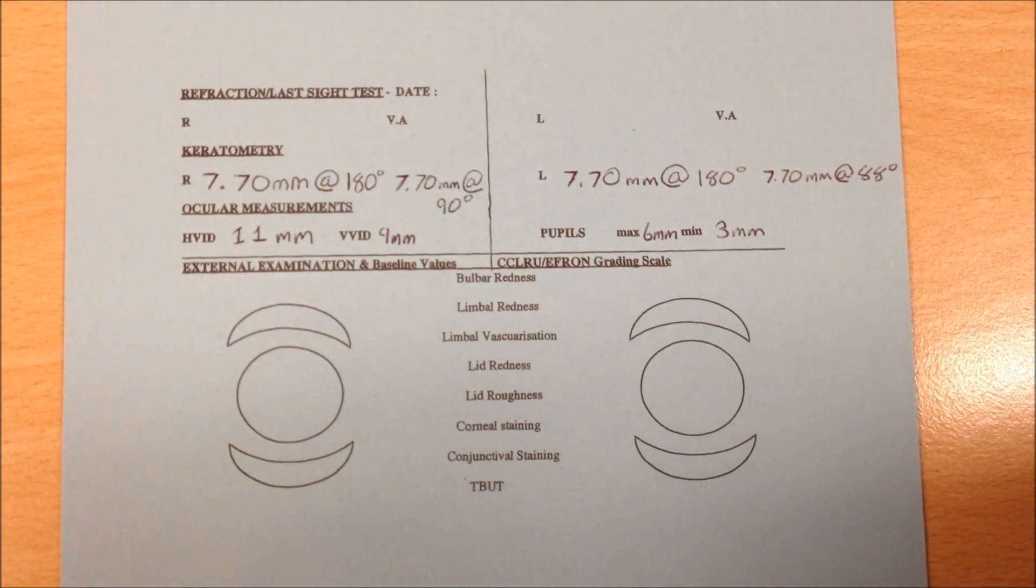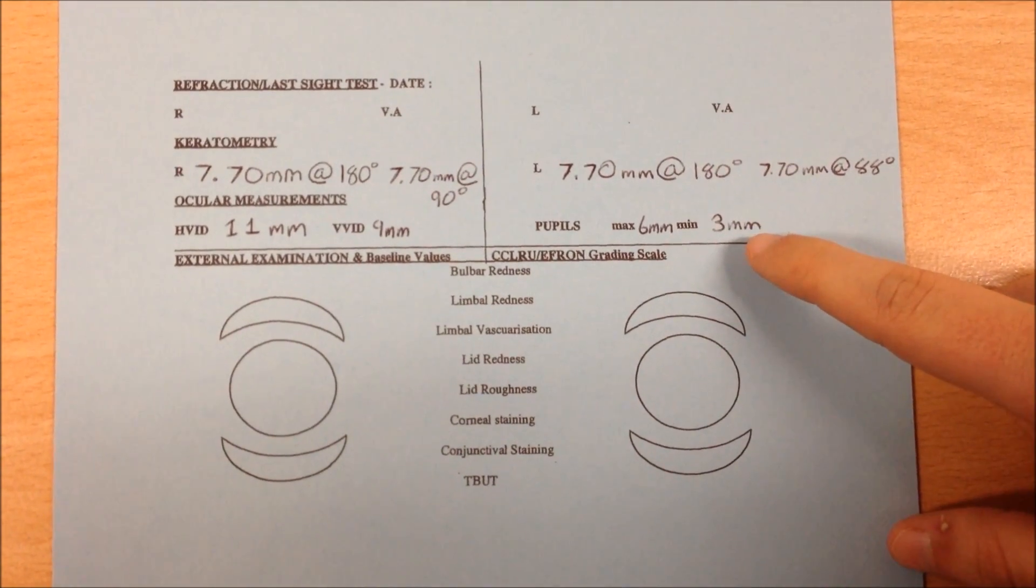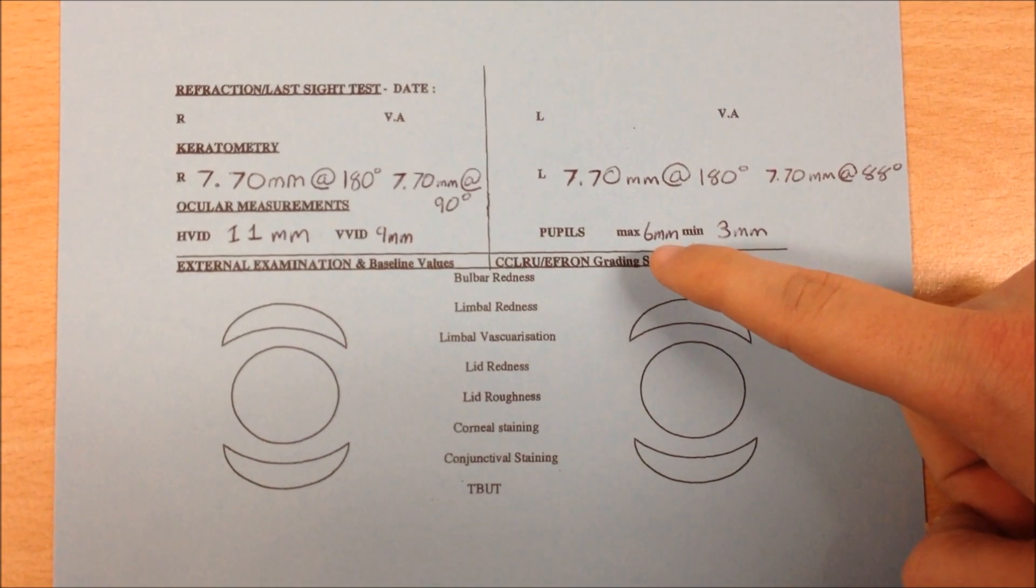Then we looked at the min and max pupils. As you can see the minimum pupil, that was 3mm, and then we have the maximum pupil, that's 6mm.